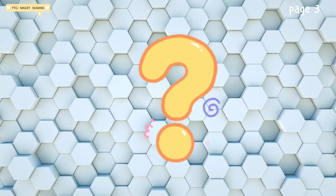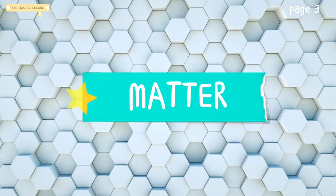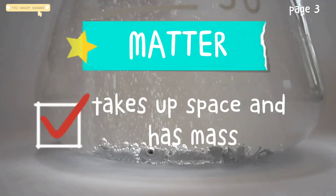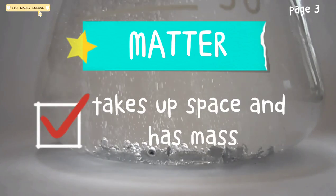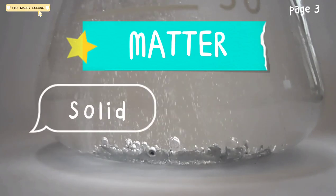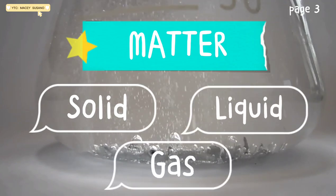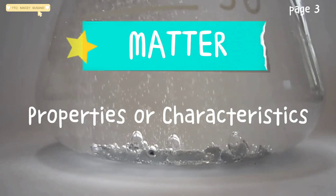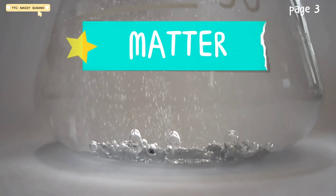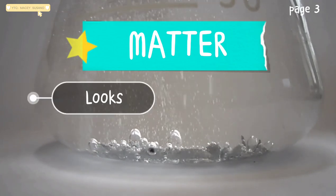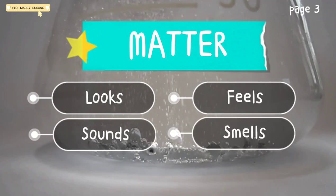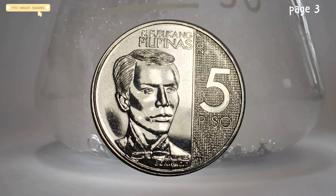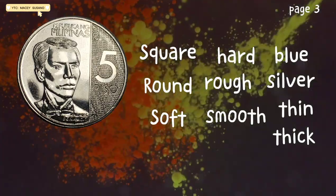Do you remember your lessons in grade 3 on matter? What is matter? Matter is anything that takes up space and has mass. We can group them according to solid, liquid, or gas. We can describe matter through its properties or characteristics. Physical properties tell how the matter looks, feels, sounds, smells, and tastes. Get a 5 peso coin. Circle the words that describe its properties.